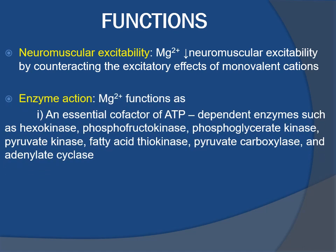Magnesium functions as an essential co-factor of ATP-dependent enzymes such as hexokinase, phosphofructokinase, phosphoglycerate kinase, pyruvate kinase, acetate thiokinase, pyruvate carboxylase, and adenylate cyclase. Magnesium binds to the beta and gamma phosphates of ATP to form a magnesium-ATP complex, which then binds to the enzyme to activate it.